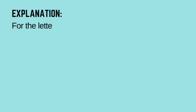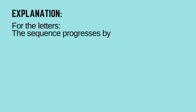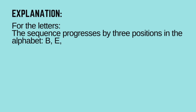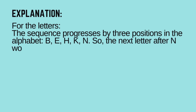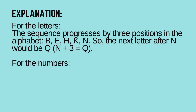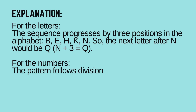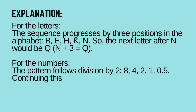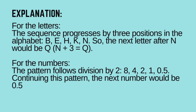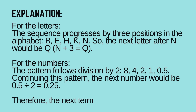Let's learn how. For the letters: the sequence progresses by three positions in the alphabet — B, E, H, K, N — so the next letter after N would be Q. N plus 3 equals Q. For the numbers: the pattern follows division by 2 — 8, 4, 2, 1, 0.5. Continuing this pattern, the next number would be 0.5 ÷ 2 = 0.25. Therefore, the next term in the sequence is Q-0.25.